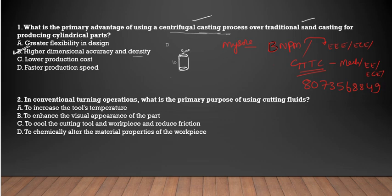In centrifugal casting, you get consistent density. For example, you can get 10 mm to 10 mm accurately. But in the sand casting process, you get dimensional mismatch — like variations between members. The primary advantage is higher dimensional accuracy and density, whereas lower production cost is definitely not the primary advantage since production cost includes process machines and all. Faster production speed is a benefit but not the primary advantage — the focus is on dimensions and density.